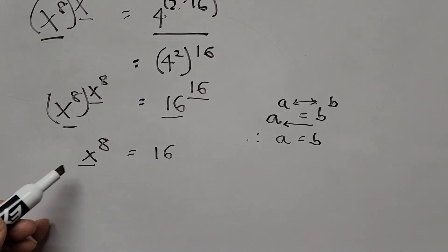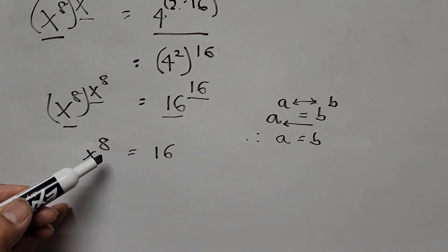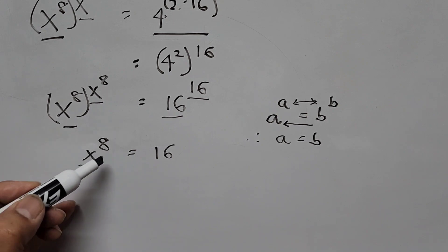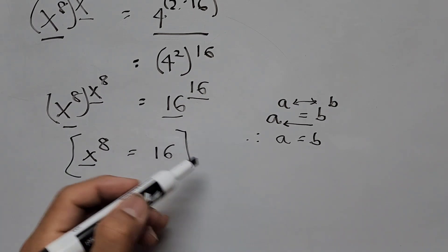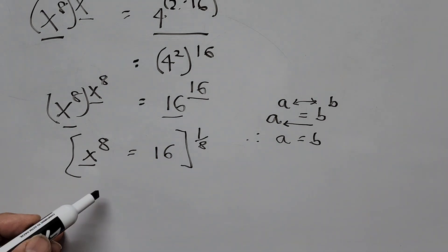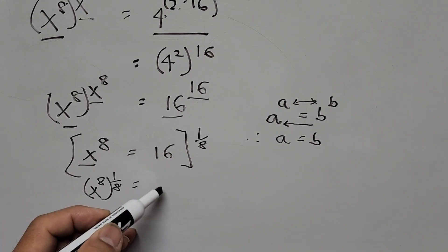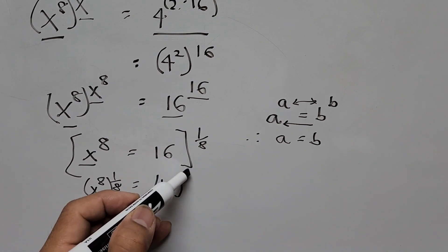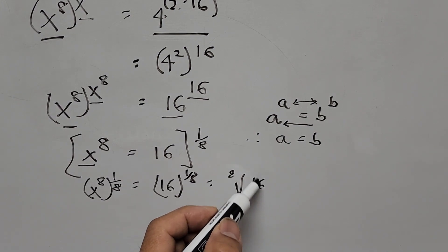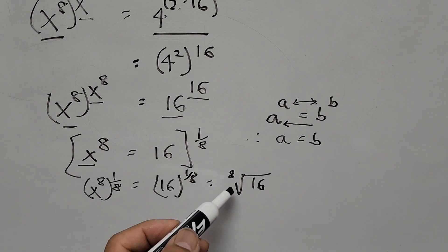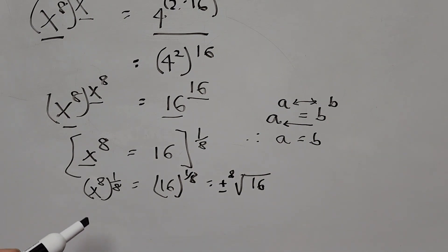To get the value of x, all we have to do is raise the whole equation with the reciprocal of exponent 8. The reciprocal of 8 is 1 over 8, so we raise the whole equation to 1 over 8. So x to the power of 8, raised to 1 over 8, equals 16 raised to 1 over 8 — or equivalently, x equals the 8th root of 16. Since this is an even root, we have two roots: positive and negative.